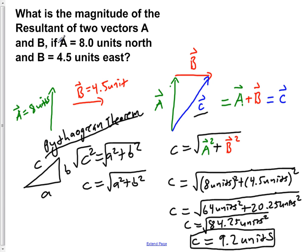The resultant vector of vector A, which is 8 units to the north shown by the green here, and our vector B of 4.5 units to the east shown by the red here, would result in a resultant vector C, which is blue here, of 9.2 units.